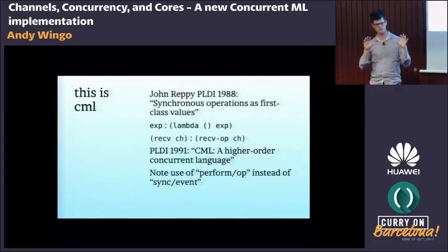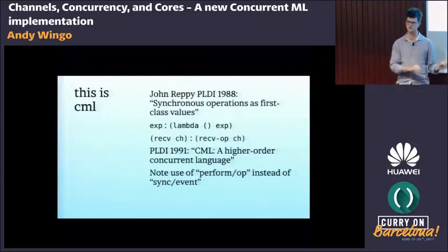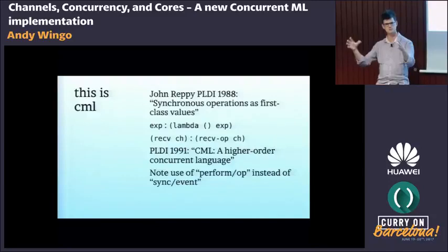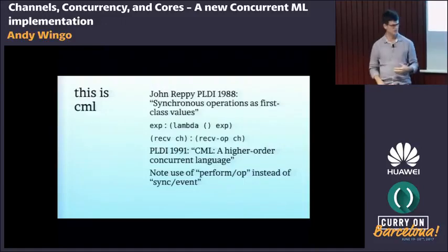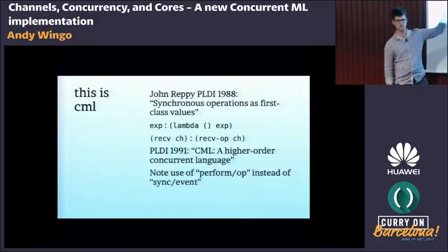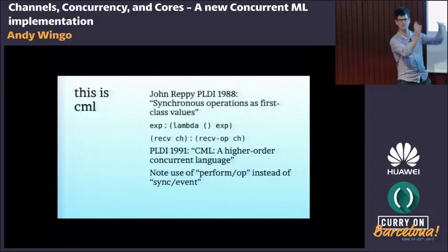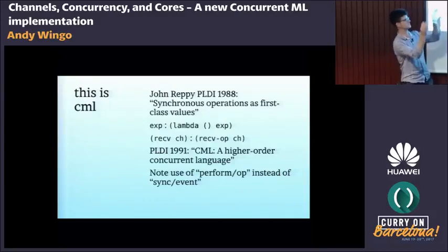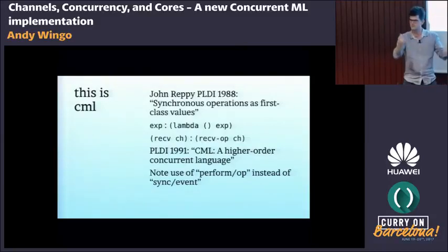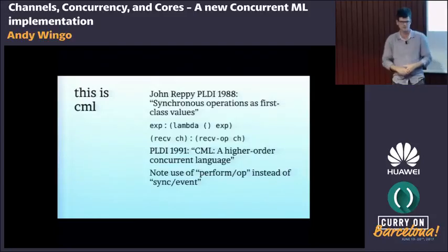This is the essence of CML. Instead of directly performing a message send, you abstract it into a data abstraction representing some synchronization operation — a communication between this thread and some part of the world. I like to think of it as the difference between an expression and wrapping it in a lambda: the expression evaluates right then, but wrapping in a lambda lets you call it many times. Receiving on a channel is like the expression; the operation describes some future possibility of receiving — it's just data, an abstraction over the operation.